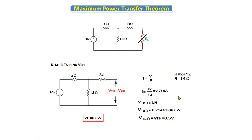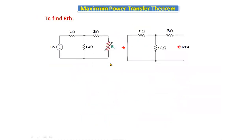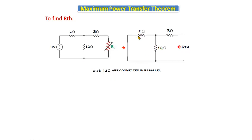Next, we find the Thevenin's resistance Rth. The procedure is: open-circuit the load resistance, short-circuit the voltage source, and find the total resistance looking into the two terminals. Short-circuiting the voltage source and open-circuiting the load resistance, we see that the 2-ohm and 12-ohm resistors are now connected in parallel.